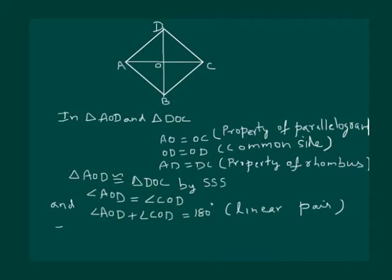This implies that 2 times angle AOD is equal to 180 degrees. That means angle AOD is equal to 180 by 2, which is equal to 90 degrees.